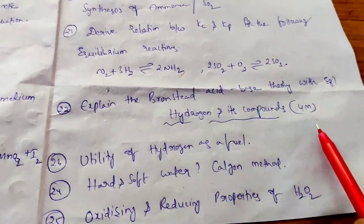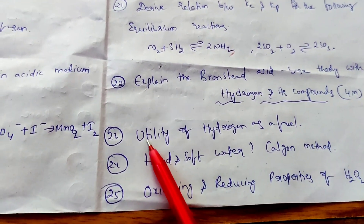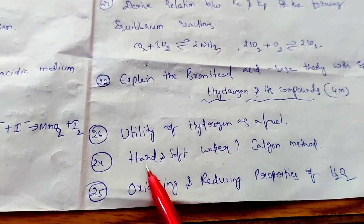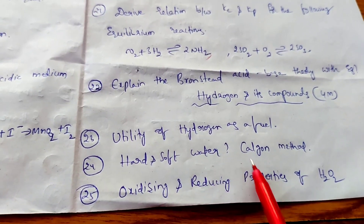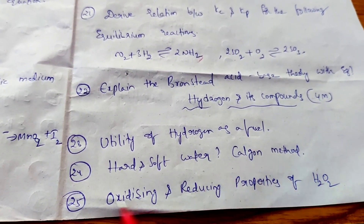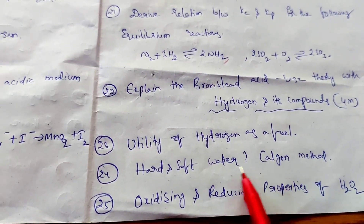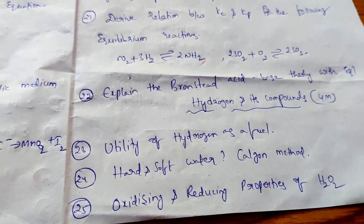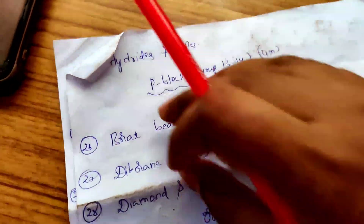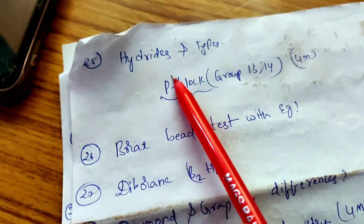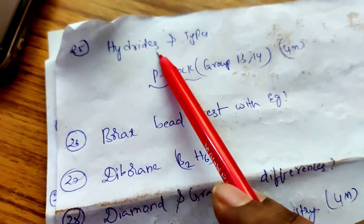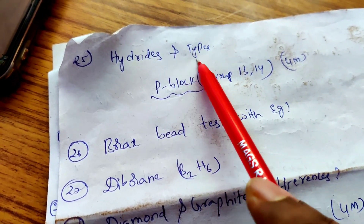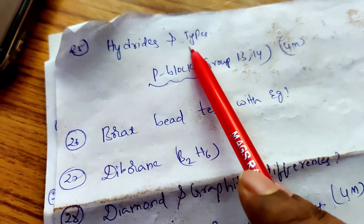Hydrogen and its compounds chapter has more questions: Write a few lines on the utility of hydrogen as fuel. Define hard and soft water, and explain how the Calgon method is used to remove hardness of water. Write the oxidizing and reducing properties of hydrogen peroxide. Also: What are hydrides? Explain the different types of hydrides — electron deficient, electron precise, and electron rich — with examples.